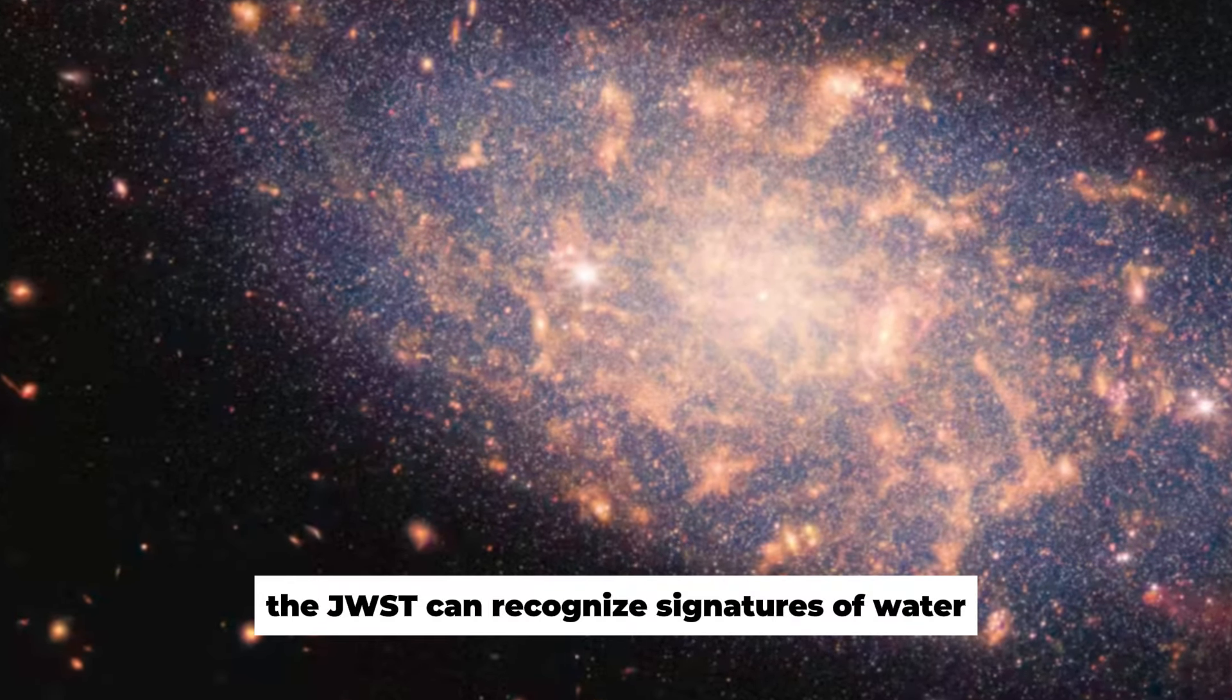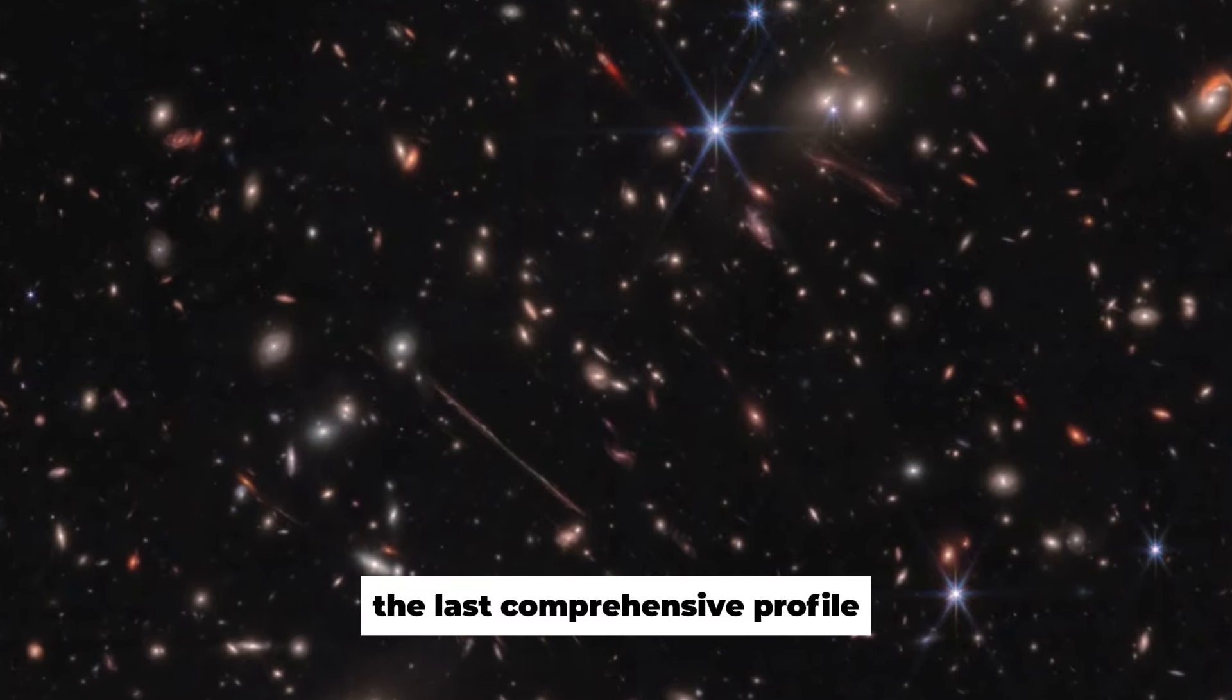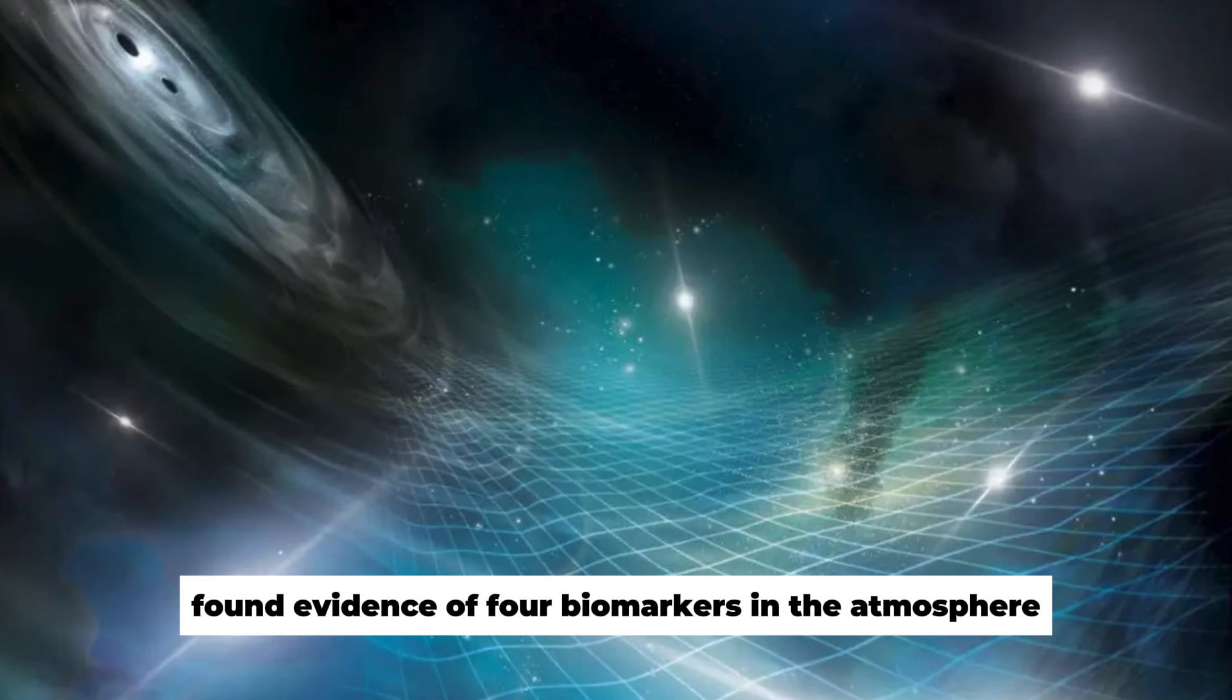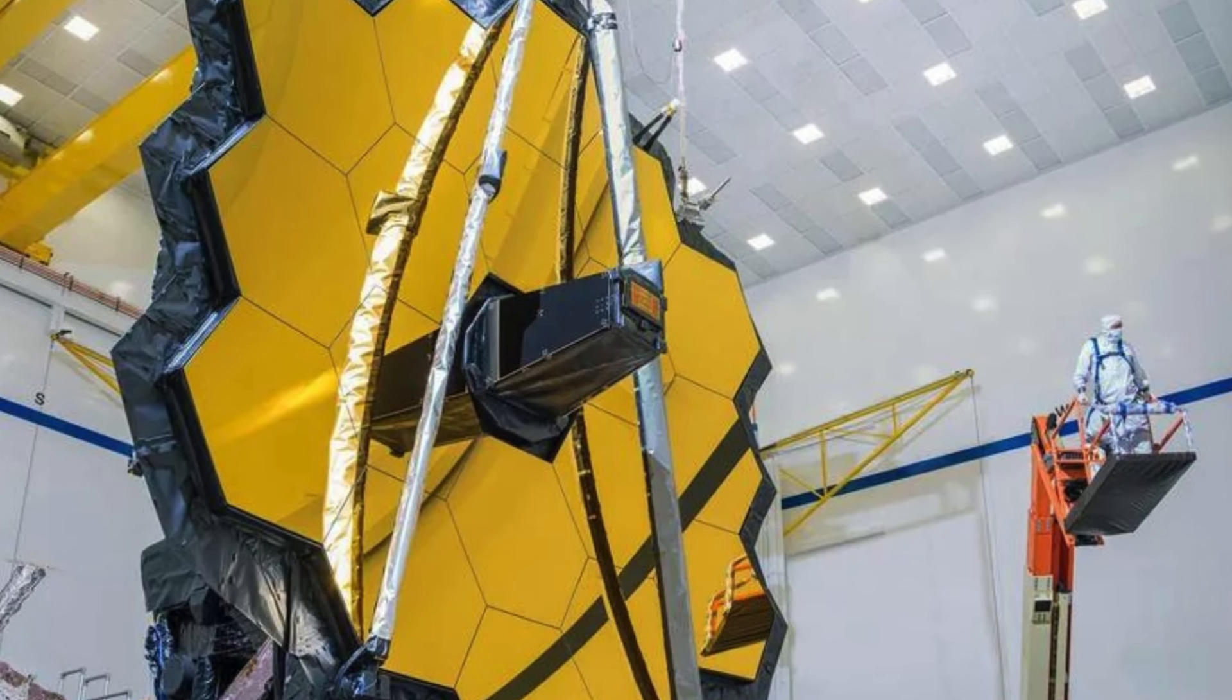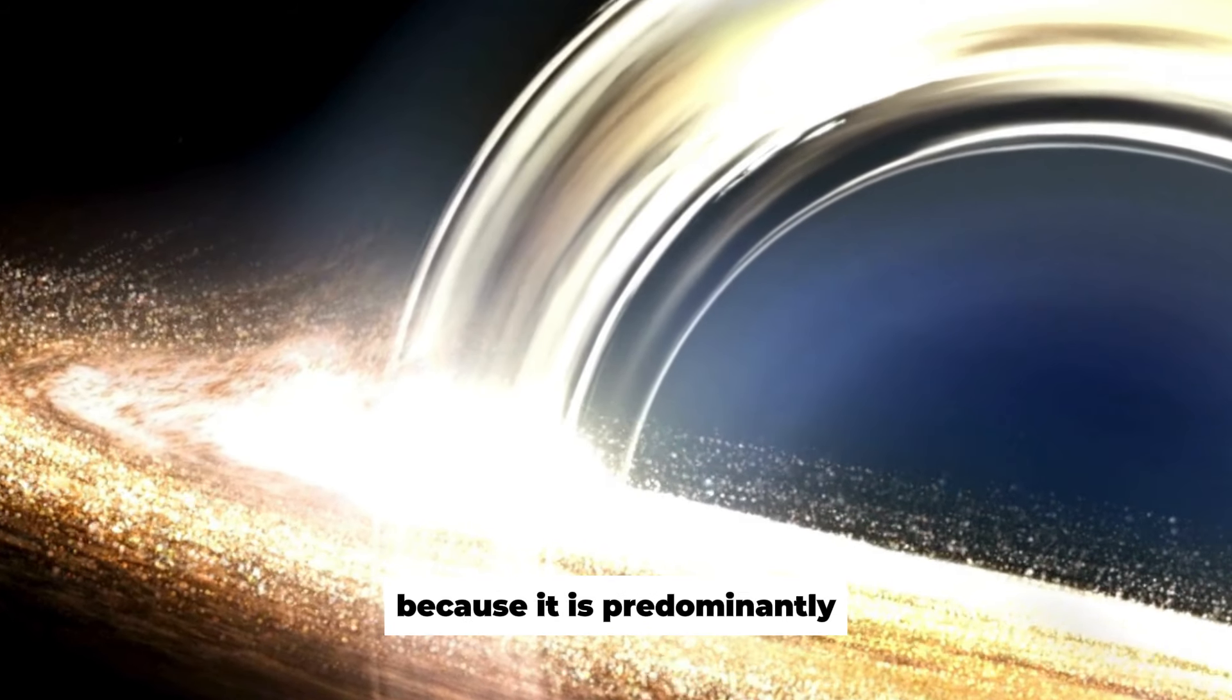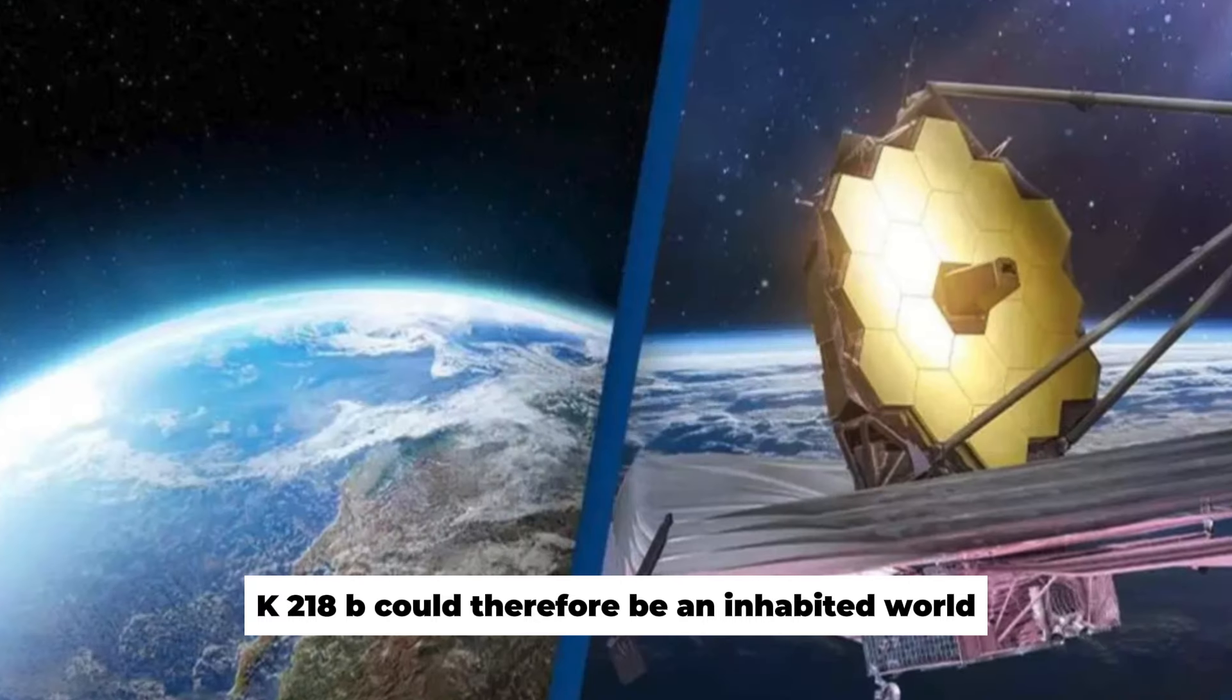The JWST can recognize signatures of water, carbon dioxide, and methane, and has already made a find. The last comprehensive profile was obtained from the exoplanet K 218b, where the JWST found evidence of four biomarkers in the atmosphere. The more such biosignatures are measured around a planet, the more likely it is that life could exist there. Particularly exciting is the potential discovery of ozone, which is considered a strong indicator of biological activity, because it is predominantly produced by biological processes in our atmosphere.